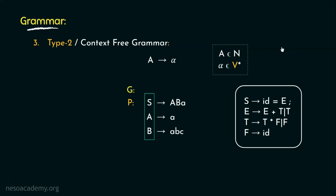Remember, in the previous session it was noted that apart from lowercase alphabets, terminals are also represented using symbols. In this set of production rules, the equal sign, the plus, and the multiplication symbols are the terminals. So this is all about the type 2 or context free grammars.